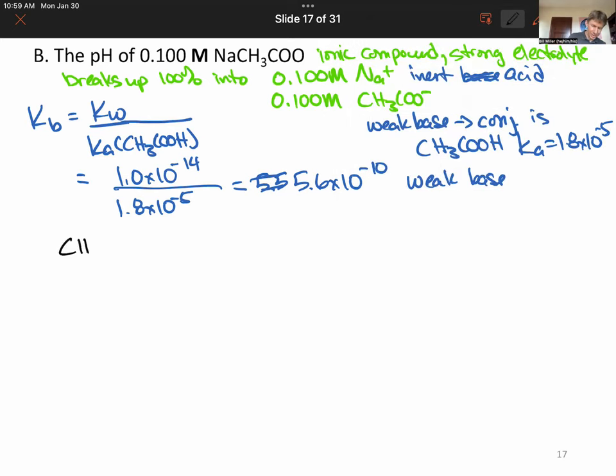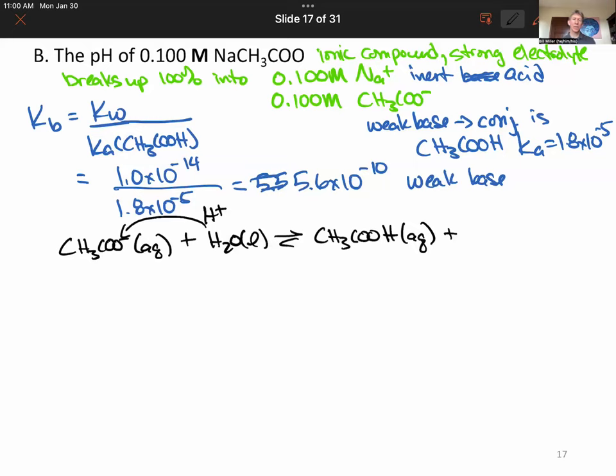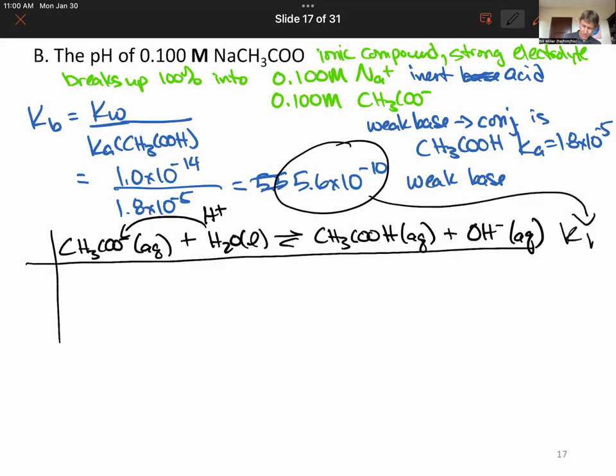All right. So now we have CH3COO minus. We have its Kb value. So we're going to write a Kb reaction. Kb reactions, they always add water. They always transfer a proton. Since this is a Kb, the base gets a proton, an H plus. And it is much prettier as CH3COOH. In fact, right above your CH3COOH, please write a little smiley face. And because this is a base, it's making hydroxides. We know their Kb value, which I always like to write at the end when I have space. I'm out of space today. But it goes there.